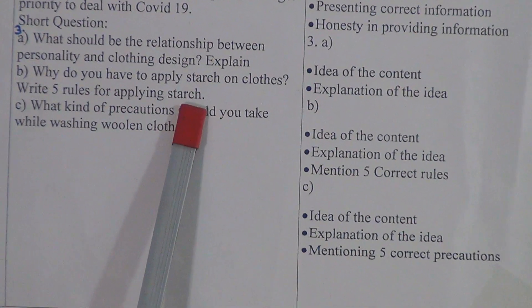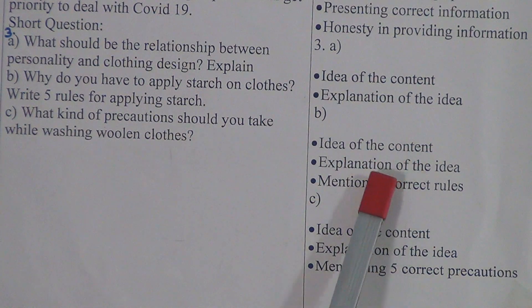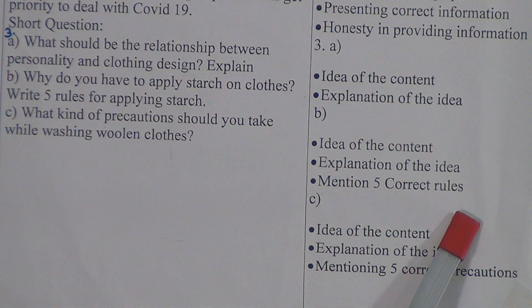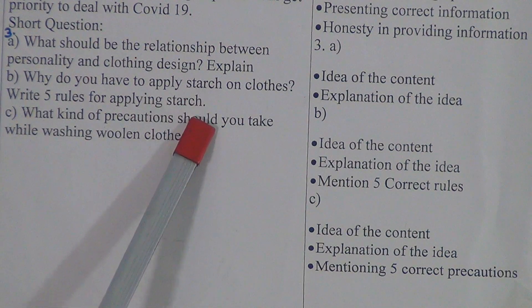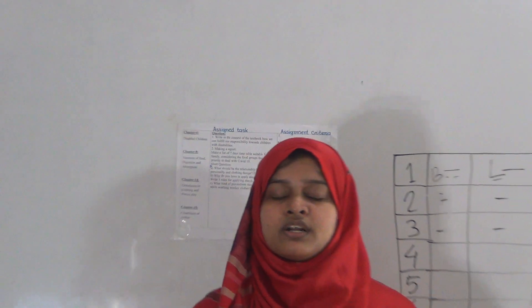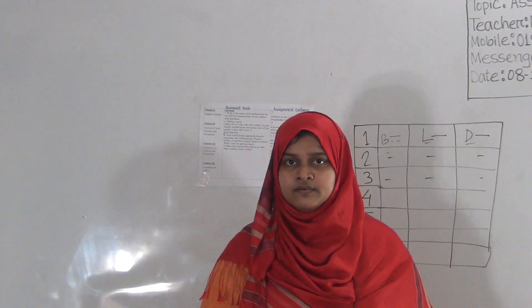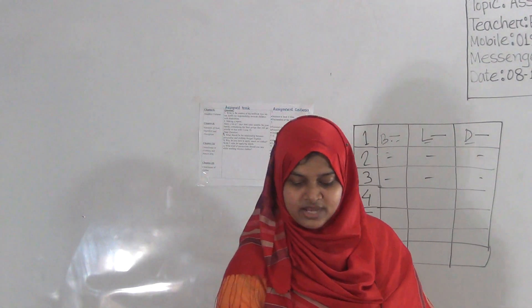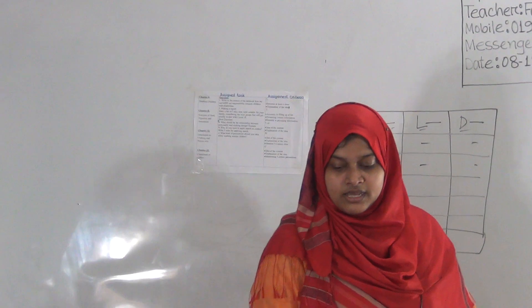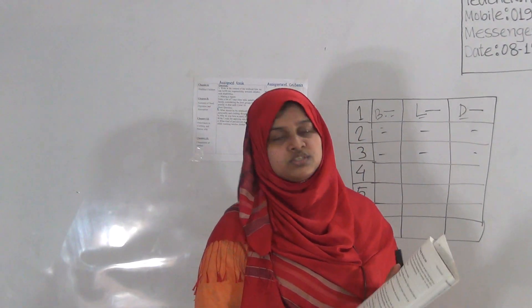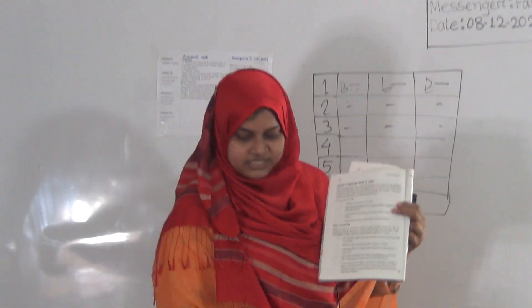Question B: why do you have to apply starch on clothes? Write five rules for applying starch. The assignment criteria includes idea of the content, explanation of the idea, and maintaining five correct rules. We usually use starch on our clothes, so you have to write why it is necessary — at least five points about this.